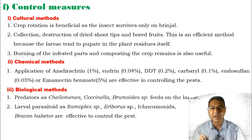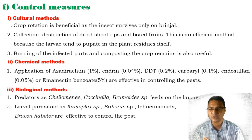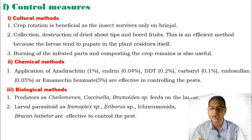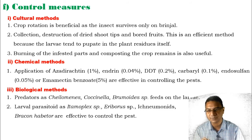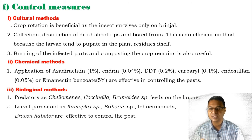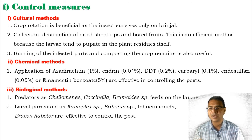Next is the biological method. We can use parasites, predators, or parasitoids. Certain predators feed on the larvae, especially ladybird beetles such as Chelominus, Coccinella, and Bromides — these species continuously feed on larvae and decline the pest population. Larval parasitoids are also applicable, such as natural parasitoids like Etymoplex species, Ereborus species, Echinomonites, and Bracon hebetor, which are effective to control the pest.